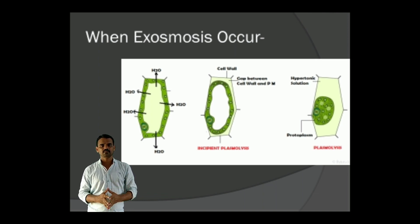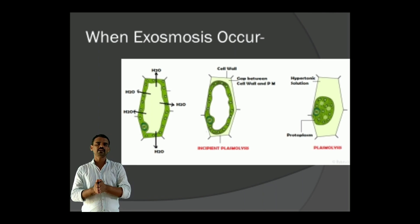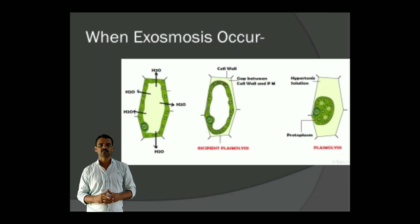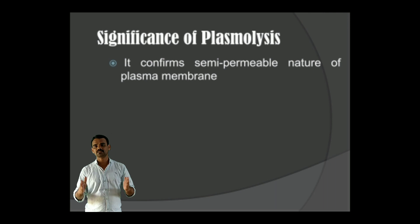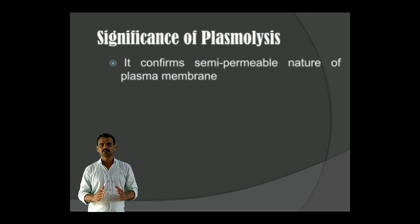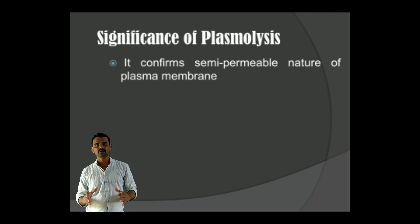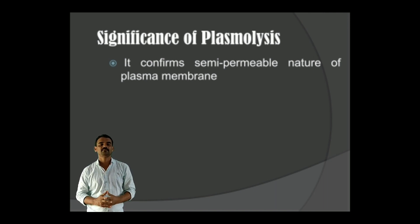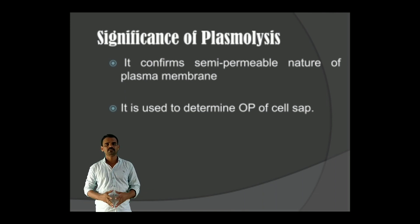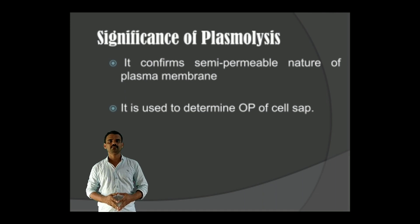In this way, the Plasmolysis phenomenon is attributed to the nature of the cell wall and Plasma membrane. Such type of Plasmolysis has different significance. It is very helpful to confirm the semi-permeable or selectively permeable nature of the Plasma membrane. Plasmolysis is also used to determine the osmotic pressure of the plant.